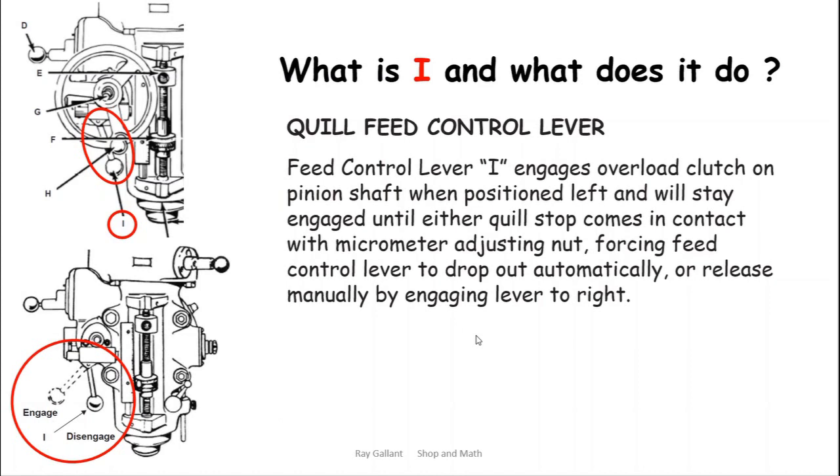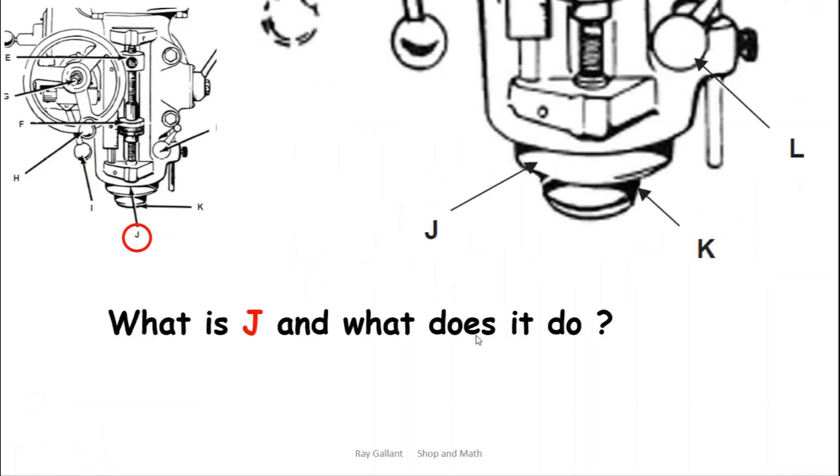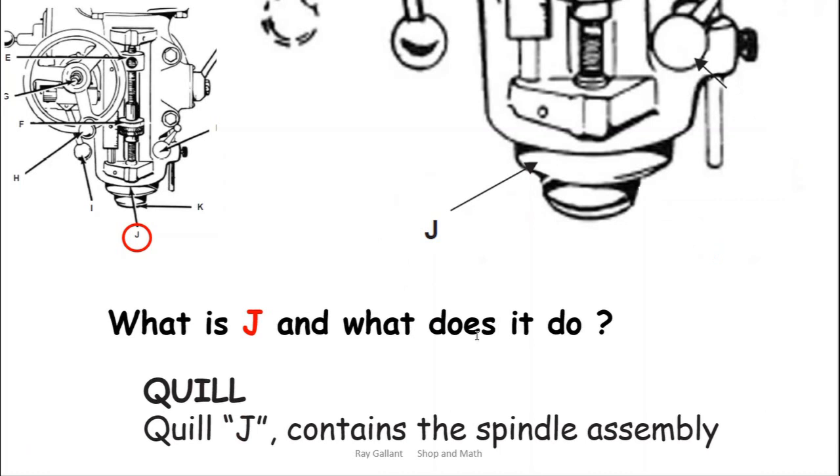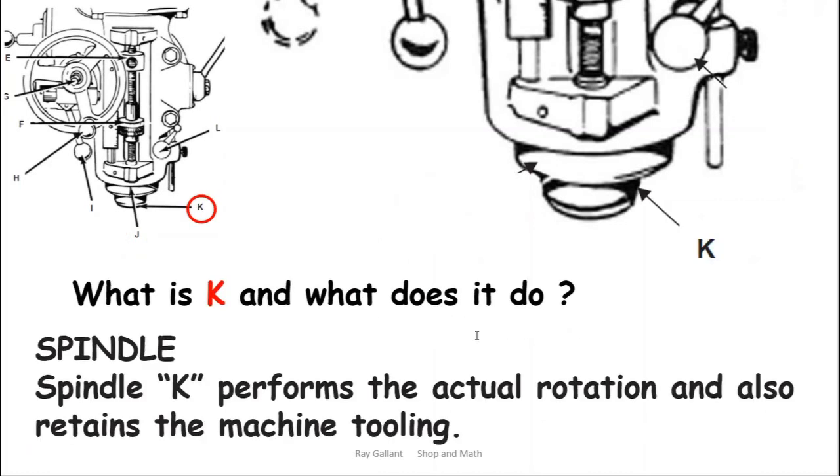What does J do? Well it's difficult, they're kind of pointing at a couple of different things there. That's a better shot. That's your quill. K is gonna be your spindle, that's where you put your cutter into.